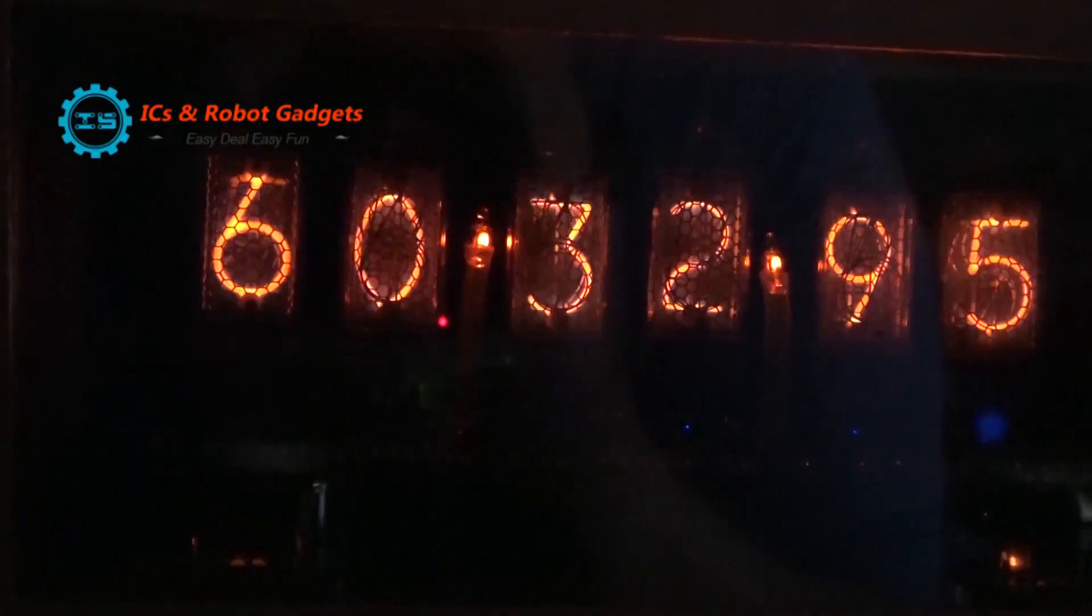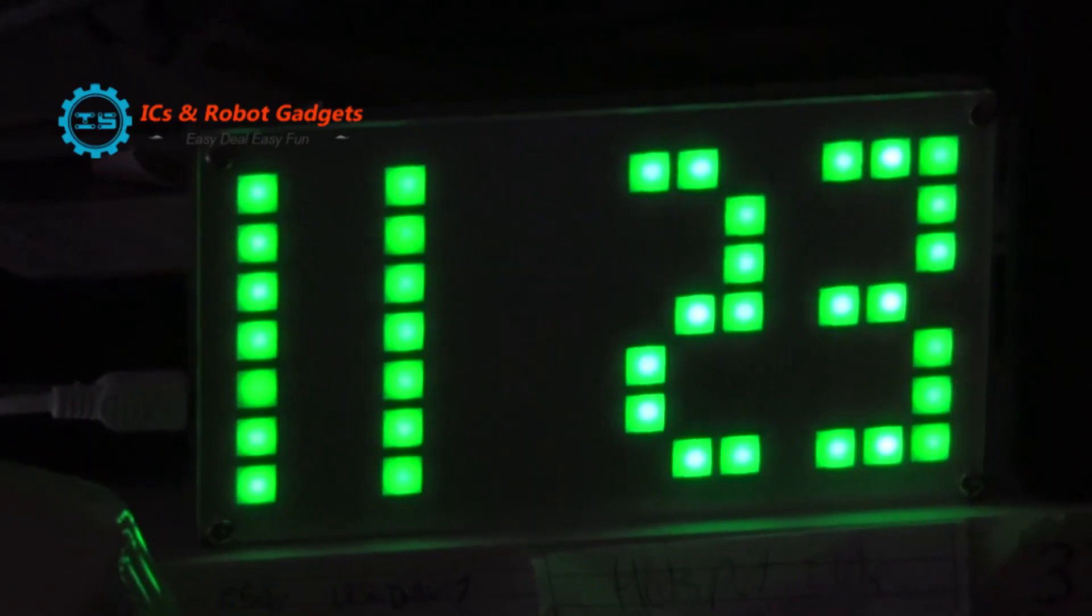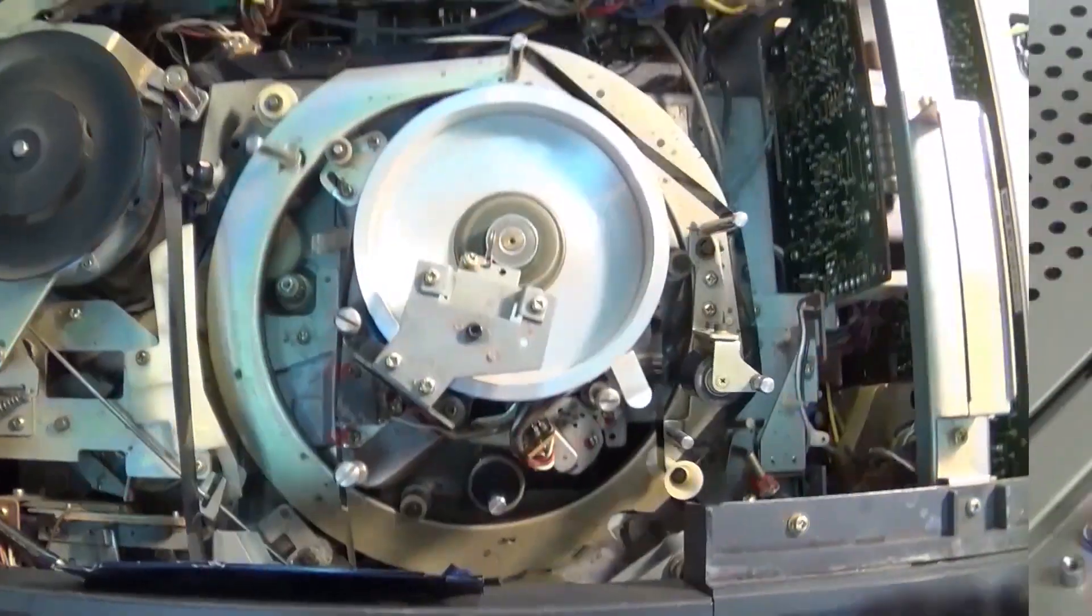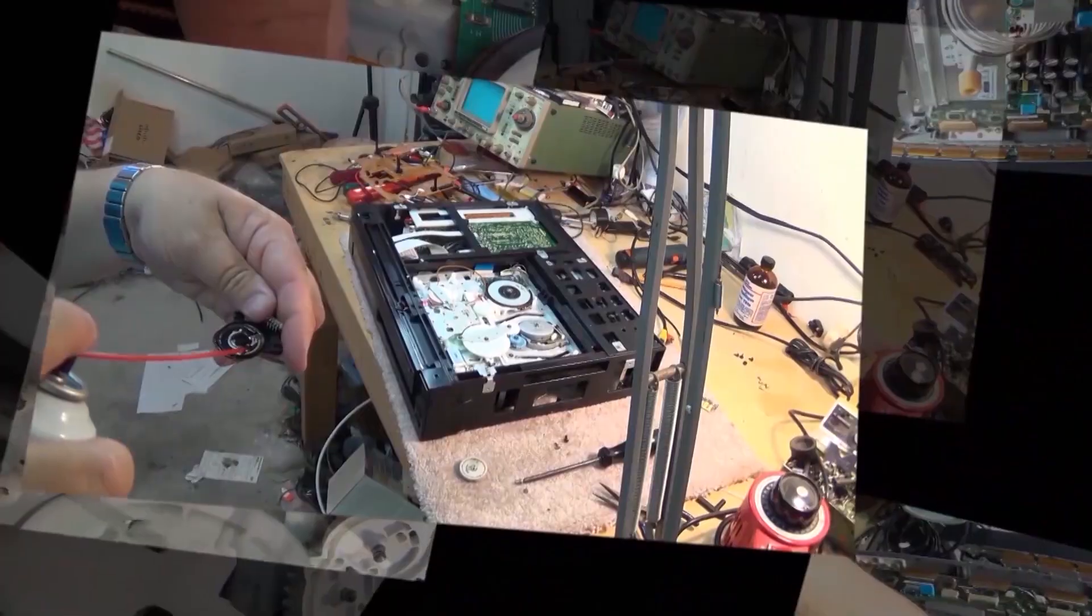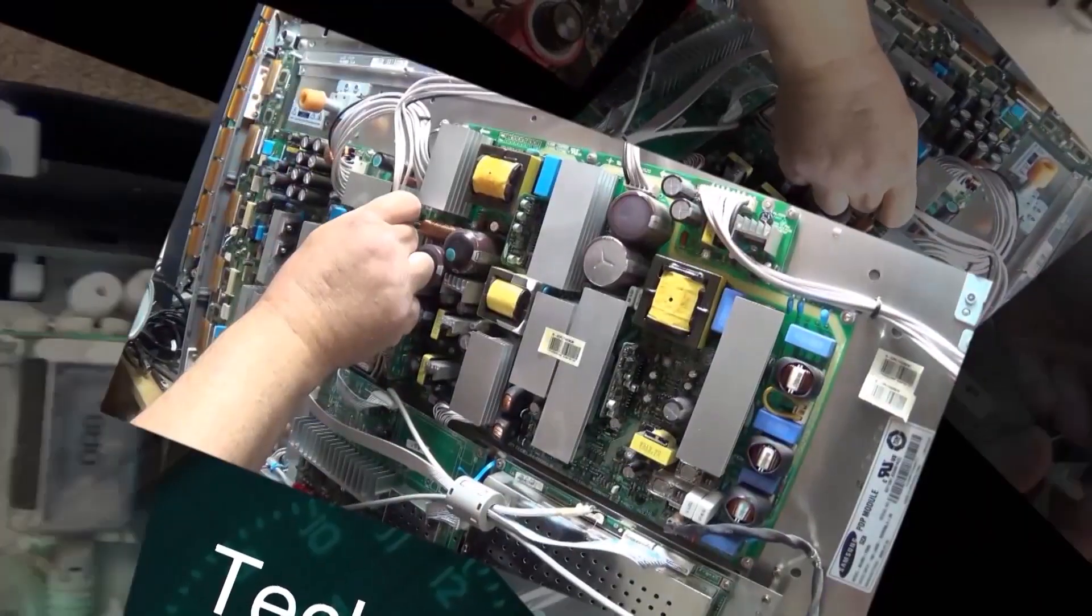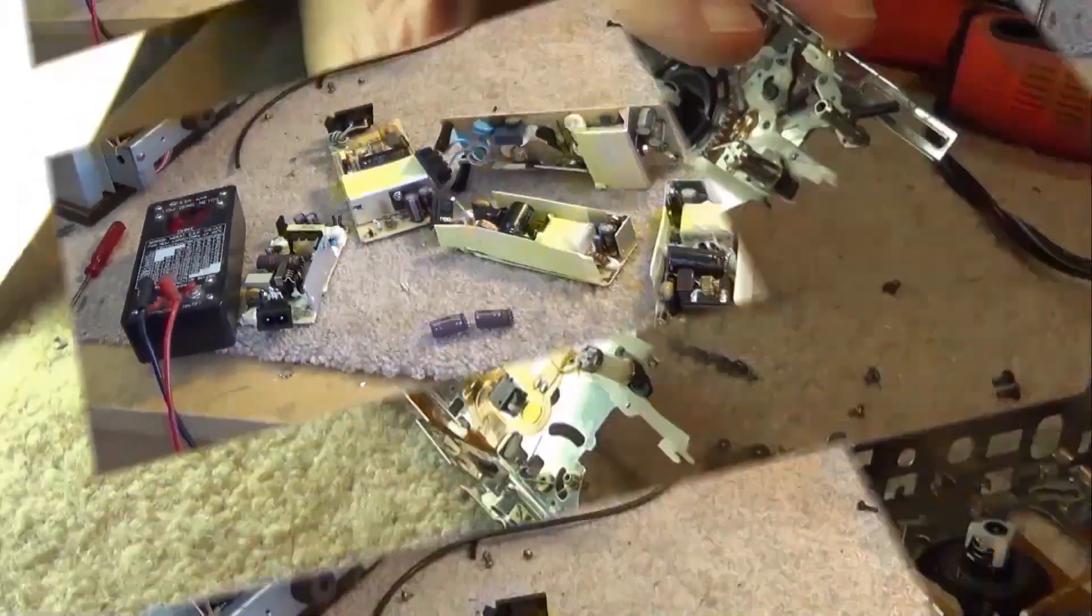I received this module from IC Station to evaluate and test. What this is is a 6-channel, 8-amp, 5-volt buck converter. It'll take a DC input of 8 to 40 volts and give you 8 amps at 5 volts.